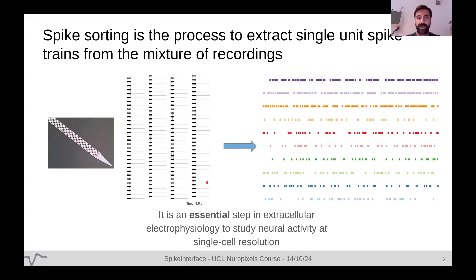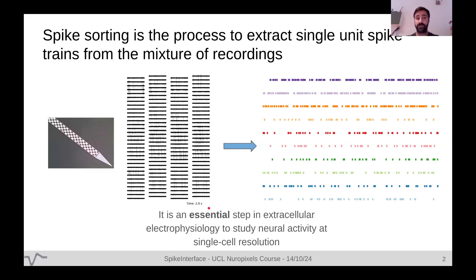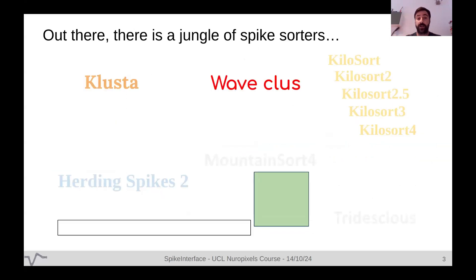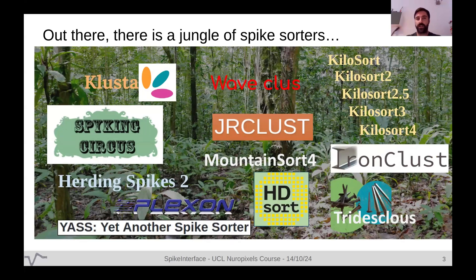Just to recapitulate: spike sorting is this essential step that turns complex and very high-dimensional raw data into a set of spike trains that tells you exactly when the different neurons recorded by your probe fired an action potential. When I started my PhD doing tetrode recordings in rats looking at hippocampus place cells, I started approaching spike sorting and realized there was a jungle of spike sorters.